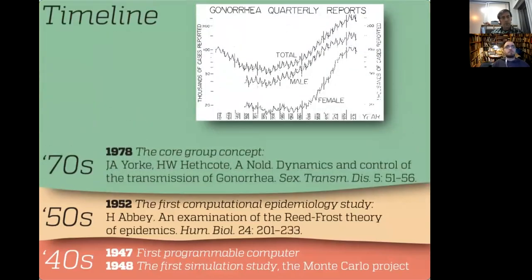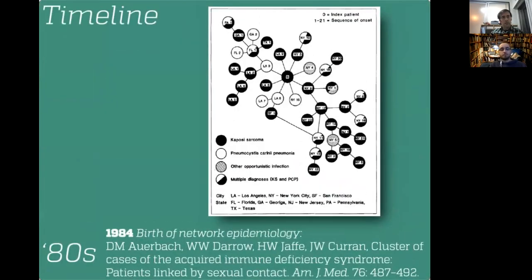Another important work was a paper especially important for finding important spreaders in networks, introducing the core group concept. The first paper using an explicit network to argue a case in network epidemiology was the first paper to claim that HIV is a sexually transmitted disease. It also introduced the concept of patient zero. When the author showed this plot to that particular person, he learned he was number zero. When he talked to media, he referred to himself as patient zero.